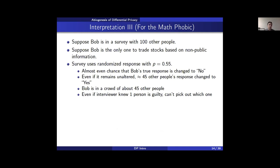For a non-technical explanation, suppose Bob is participating in an insider trading survey with 100 other people, and Bob is the only one who actually traded on non-public information. Even so, Bob can be convinced he is protected: with spinner probability 0.55, there's an almost even chance his response gets changed to no anyway. If his response doesn't get changed and the mechanism outputs yes for him, there are still around 45 other people whose response was changed to yes. Bob is effectively hiding in a crowd of around 45 others, and the interviewer won't know which one among those with yes outputs is the guilty one.